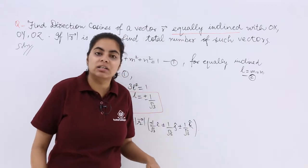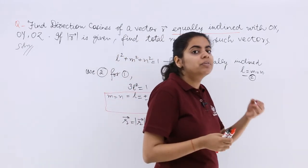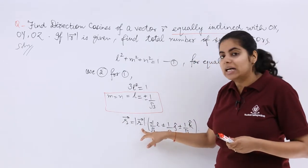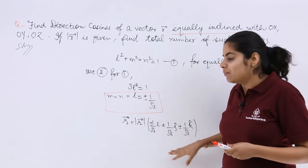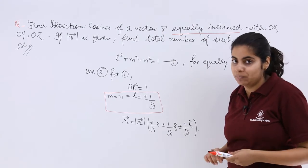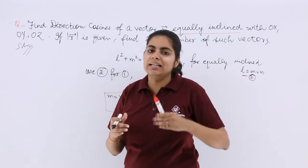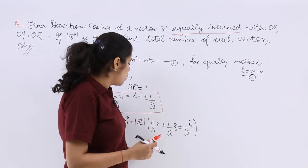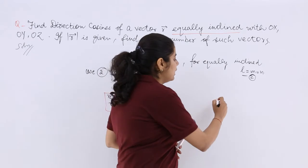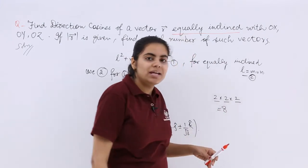As I mentioned in the previous video, there are important properties we learn through questions. A vector equals its magnitude multiplied by its unit vector, and unit vectors are expressed in terms of cosines: cos α î + cos β ĵ and so on. Now, each of the three components has a ± sign — two possible signs in three positions — so by permutations and combinations: 2 × 2 × 2 = 8 ways to arrange them.